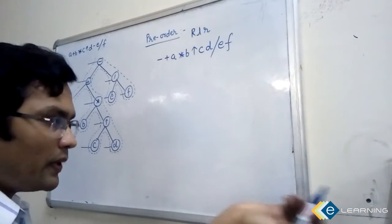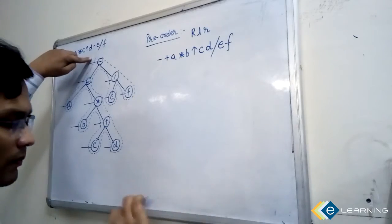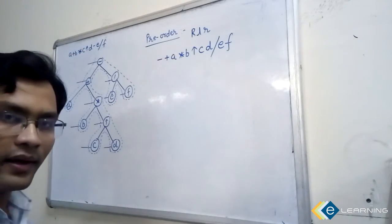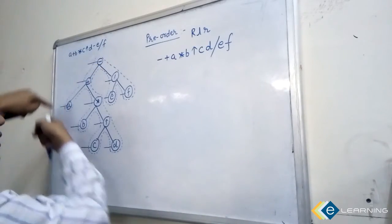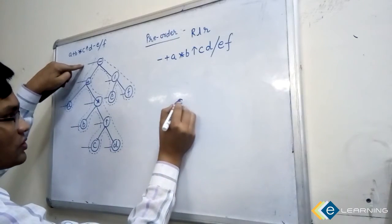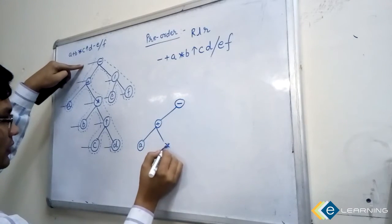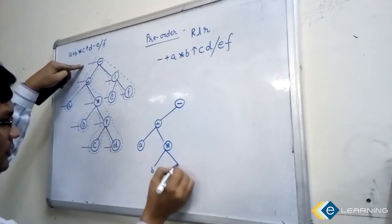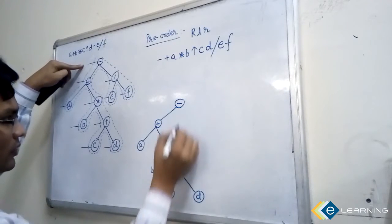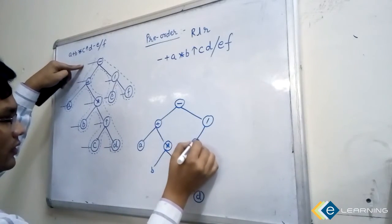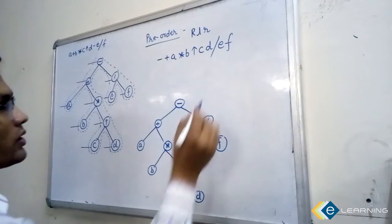This gives the corresponding pre-order — very easy. Just mark a line before each node, traverse from the root, and whenever a line is intersecting write it down. Similarly for post-order, mark a line post to the node. Let me redraw the tree: this is A star B, power C and D, divide E.